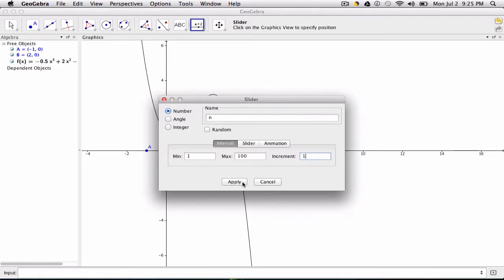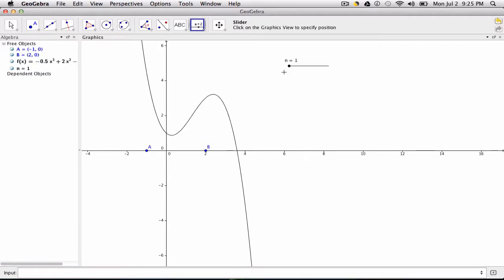This variable will define the number of rectangles we use to approximate our upper and lower sums. So now that slider is in place. Of course it doesn't do anything yet because we haven't given any equation that involves this variable, but now we will.